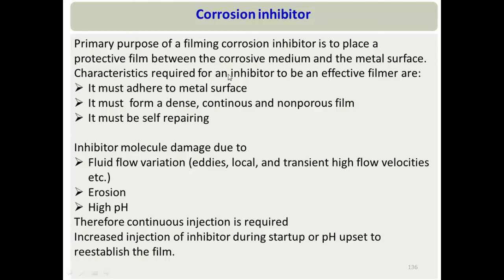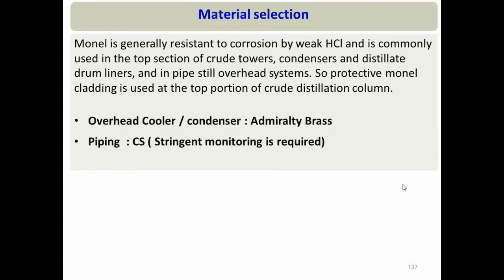Because they form a film, these inhibitors are called filming amines or filmers. Once the film forms, corrosive substances cannot contact the metal surface and corrosion rate reduces. For an effective film, the inhibitor must adhere to the metal surface, be non-porous, and be self-repairing. Due to fluid flow variations or transient flow, the film can break; it can also break at higher pH. Therefore, continuous injection is required, and if pH rises, ammonia dosing should be reduced and corrosion inhibitor dosing increased.